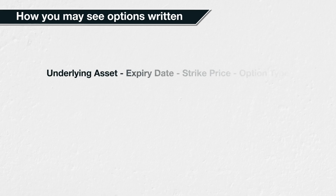Let's look at how you may see an option written. On the Deribit platform, option instruments are written in the following format: underlying asset, expiry date, strike price, option type.